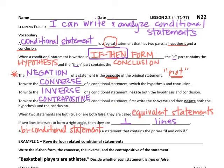The next vocab word is converse. To write the converse of a conditional statement, we're just going to switch the hypothesis and the conclusion. Everything after the word if is the hypothesis, and everything after the then is the conclusion — we're just going to switch those two things to write the converse.